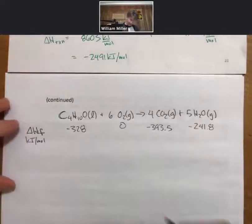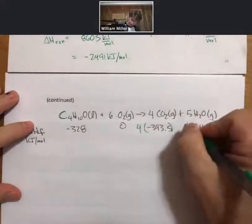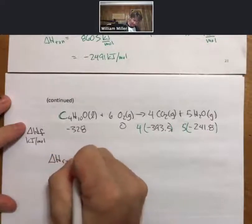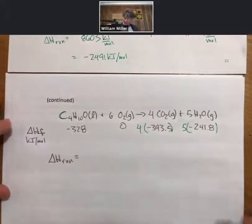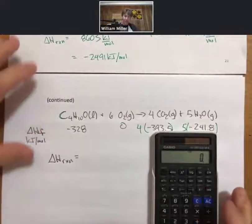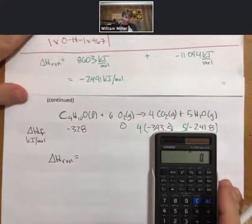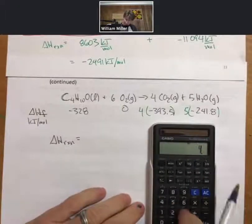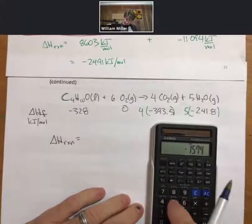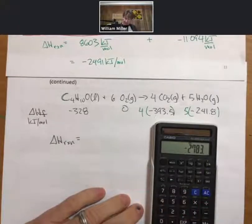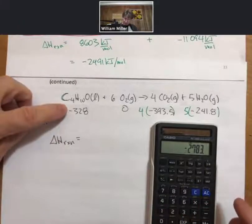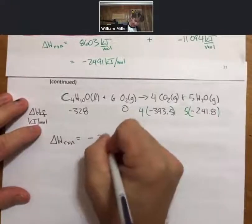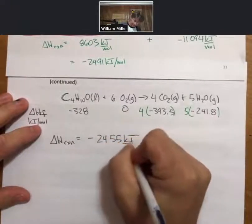So we're going to get 4, 5, and my ΔH reaction, which is now these numbers minus this negative number—I know it's confusing, needlessly so some might say, but your job is to figure out what makes sense to you and how to do this. So this is going to be 4 times 393.5 negative plus 5 times 241.8 negative minus a minus so plus 328. And I get minus 2,455 kilojoules per mole.